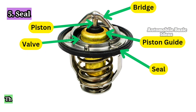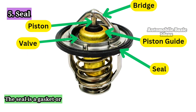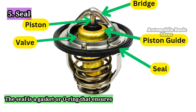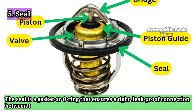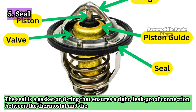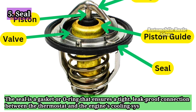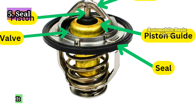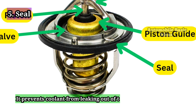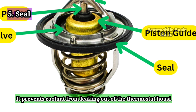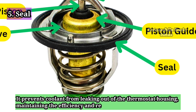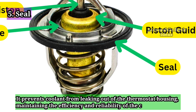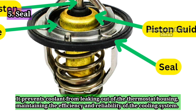Seal: The seal is a gasket or o-ring that ensures a tight, leak-proof connection between the thermostat and the engine's cooling system. It prevents coolant from leaking out of the thermostat housing, maintaining the efficiency and reliability of the cooling system.